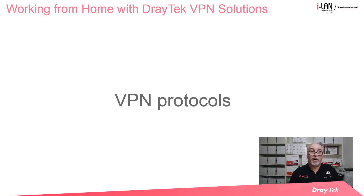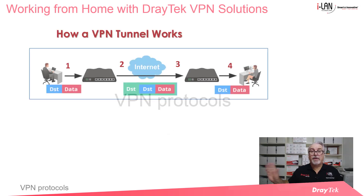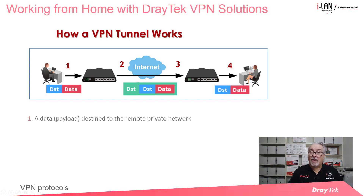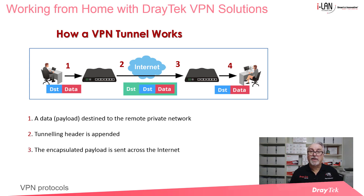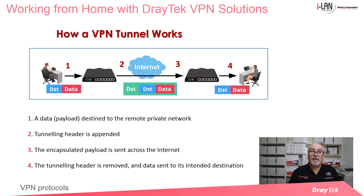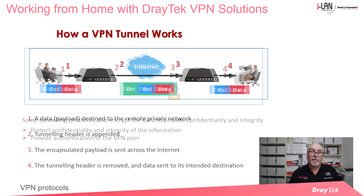We'll now look at VPN protocols and how VPN tunneling works. In step 1, the data payload is sent from a PC to the destination network. In step 2, the sending router appends a tunneling header to the data packet, and this encapsulated payload is sent across the internet to the destination router in step 3. Finally, the tunneling header is removed by the destination router and the data payload is sent to its final destination in step 4. Some tunneling protocols not only encapsulate the data, but can also encrypt it to further protect the confidentiality and integrity of the information.